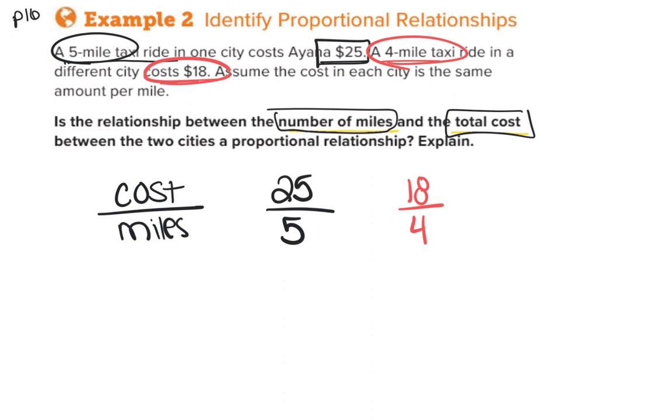And so in this first one, I have 25 divided by five, and I can see each of these have a common factor of five. And so this first one simplifies to 5/1, or we can just say five. And then our second one, I can simplify by dividing two out of our top and bottom. And this one ends up giving us 9/2, which is equal to 4.5.